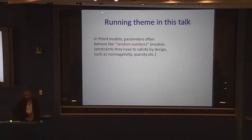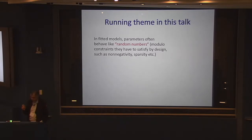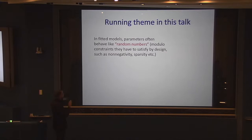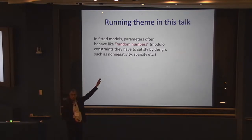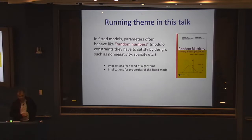The running theme in this talk is a phenomenon my group has discovered in three settings over the last year: in the fitted model, the parameters — the numbers that occur in the model — behave like random numbers. Random numbers modulo whatever constraints they may have to satisfy by design, by the architectural plan. Sometimes model parameters have to be non-negative or sparse, meaning very few are non-zero. But modulo that, they seem to be pretty random. I call that universality.